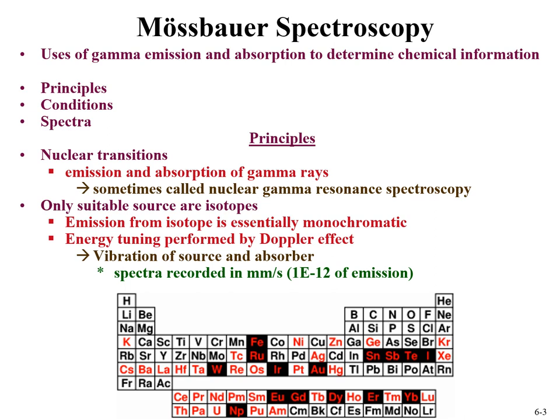The emission can be tuned to a small degree by the Doppler effect. If a source and sample are moving towards or away from each other, that Doppler effect can slightly shift the energy — and that's what we exploit in Mössbauer spectroscopy. Sources and absorbers are vibrated, the spectra are recorded in millimeters per second, and we look at the amount of photon passing through the sample as a function of vibration to describe the chemical composition.